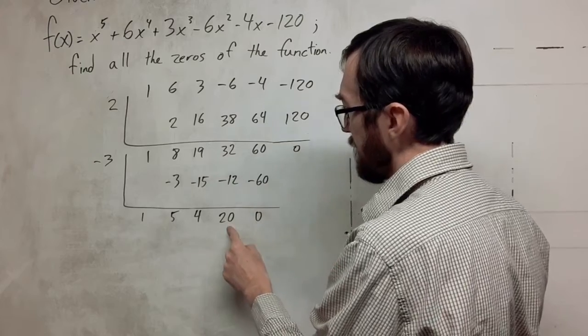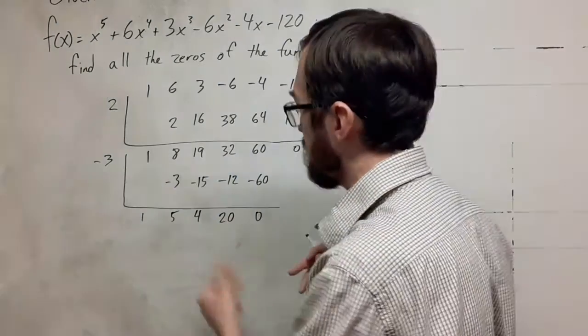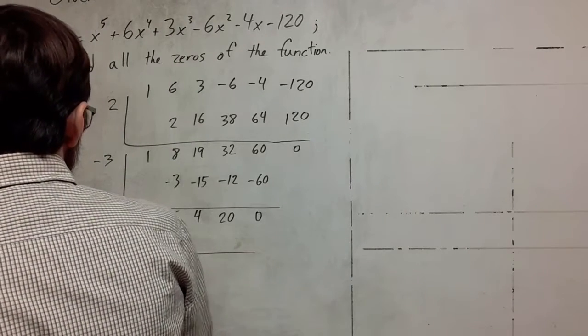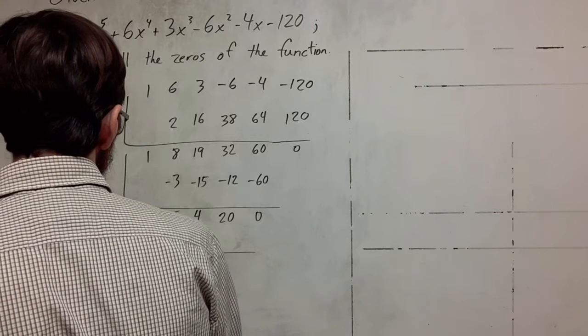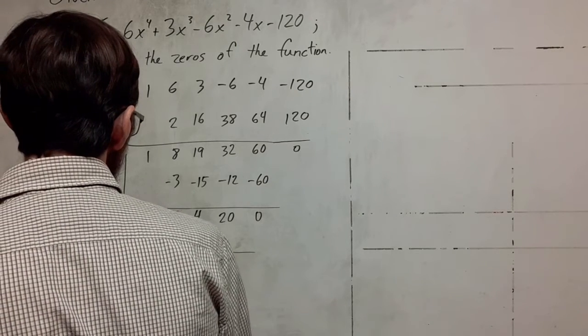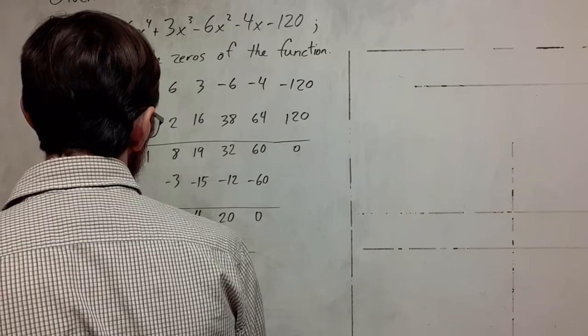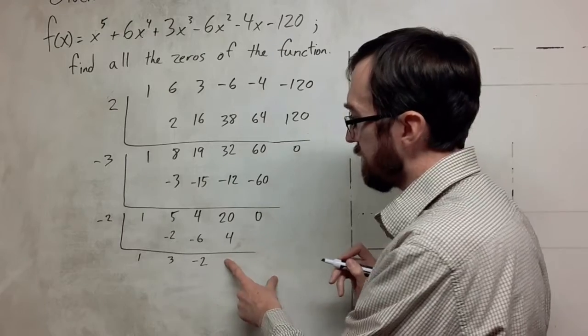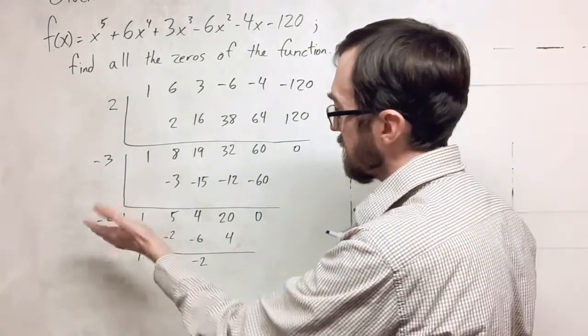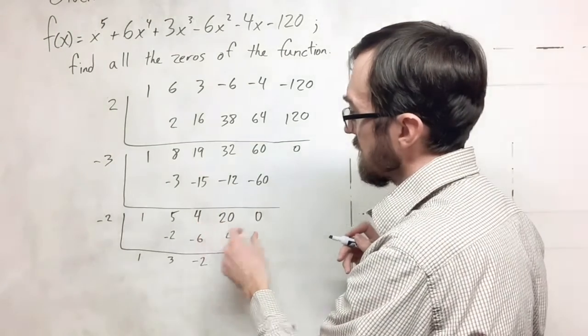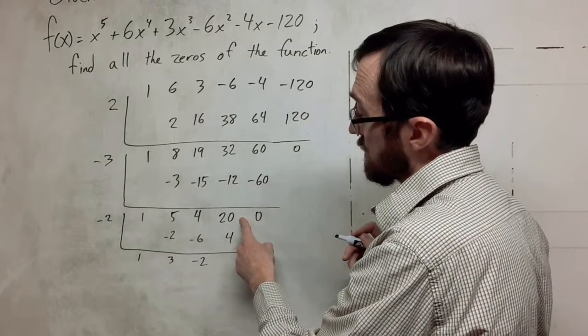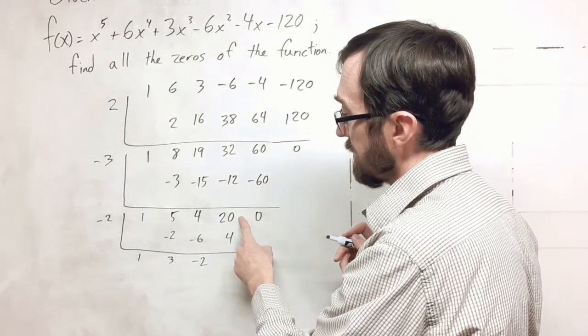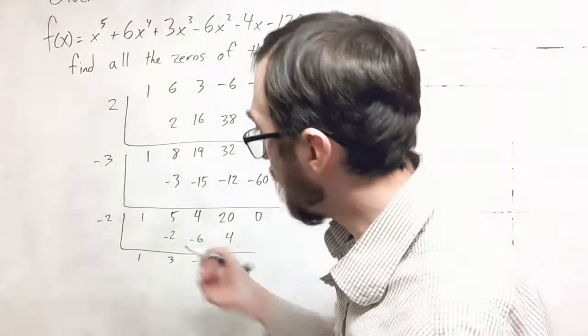We again have an even number, so I'm going to try a negative 2 on this. You can see that I'm going to have 20 plus 4 is 24, which is of course not 0. So negative 2 is not on this. We can try 5 would be a factor, 20 is a factor, 1 is a factor.